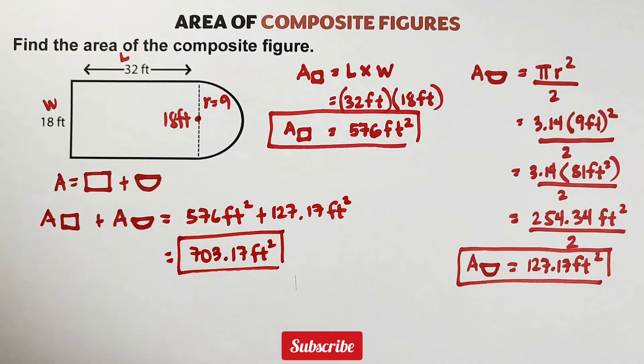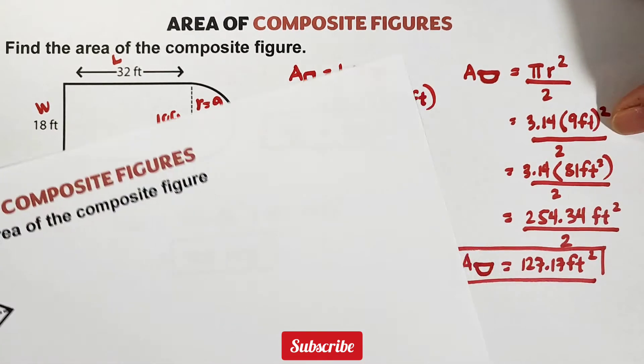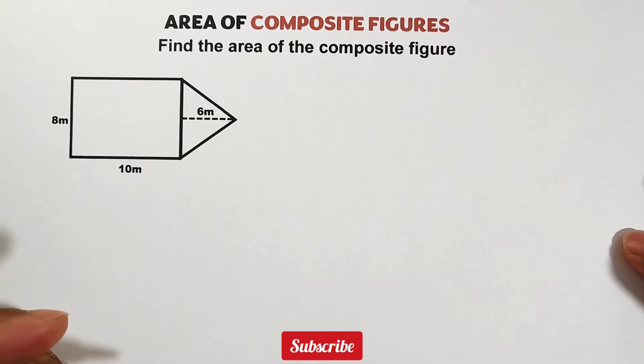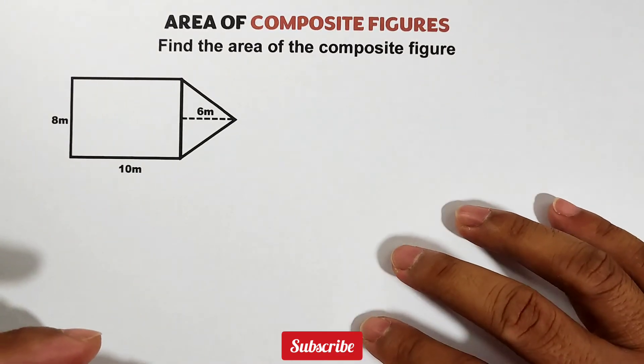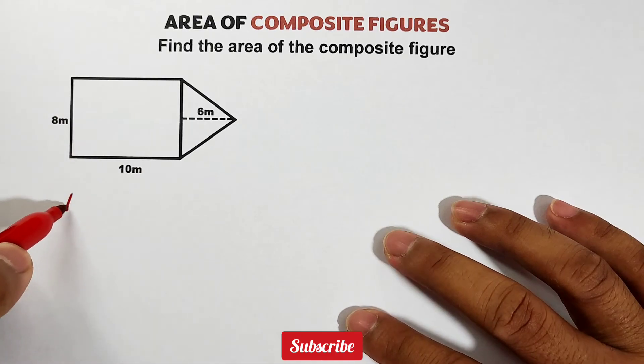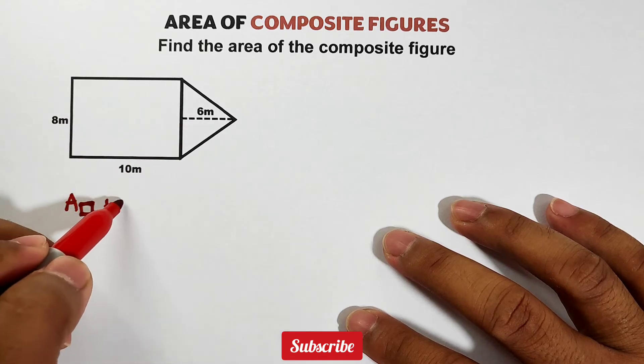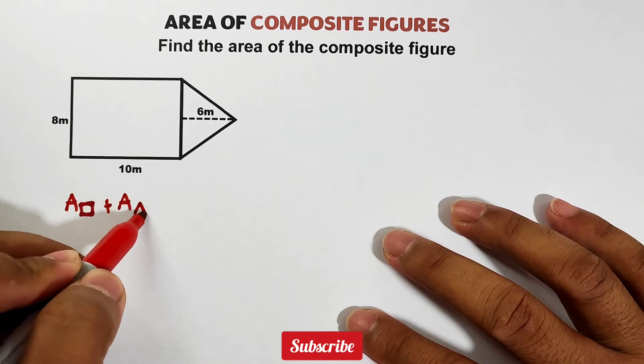Now let's continue with the second figure. This figure is composed of a rectangle, so we need to calculate for the area of the rectangle plus a triangle. So we need to get the area of the triangle.